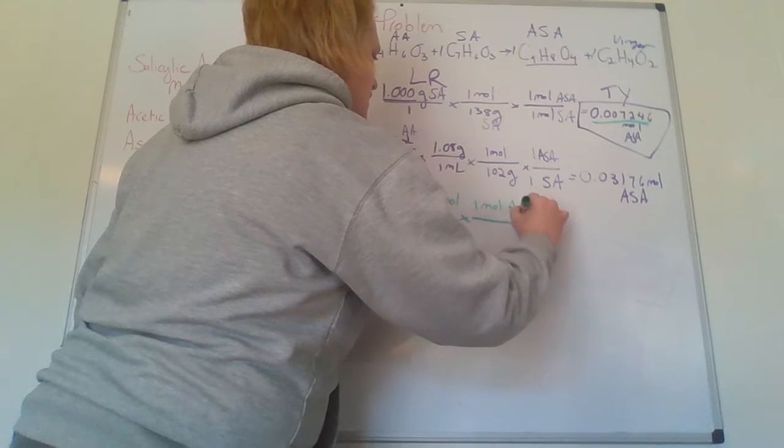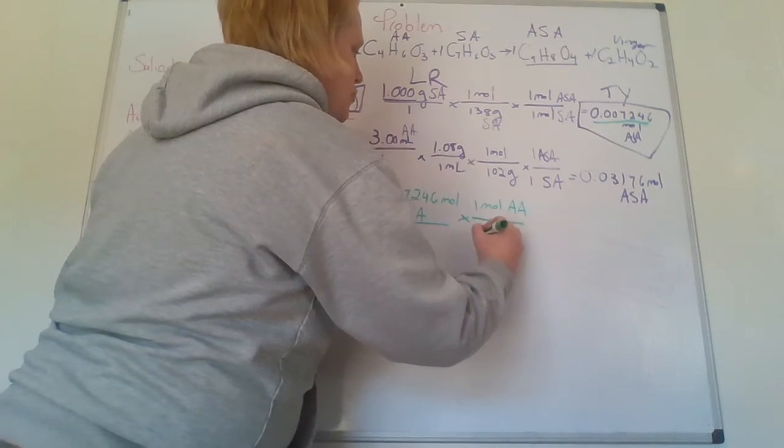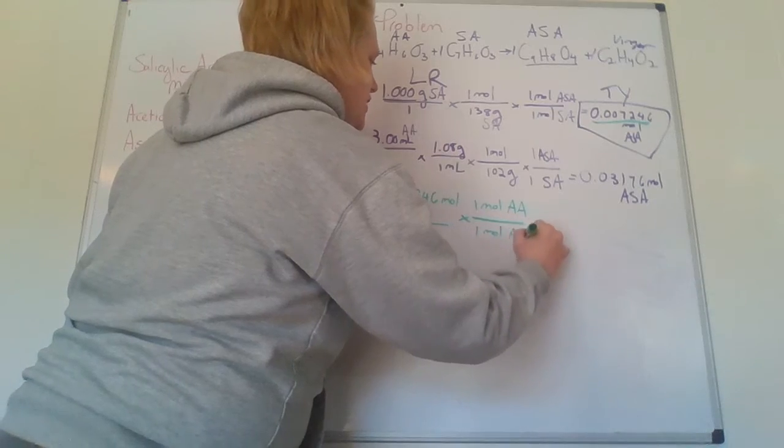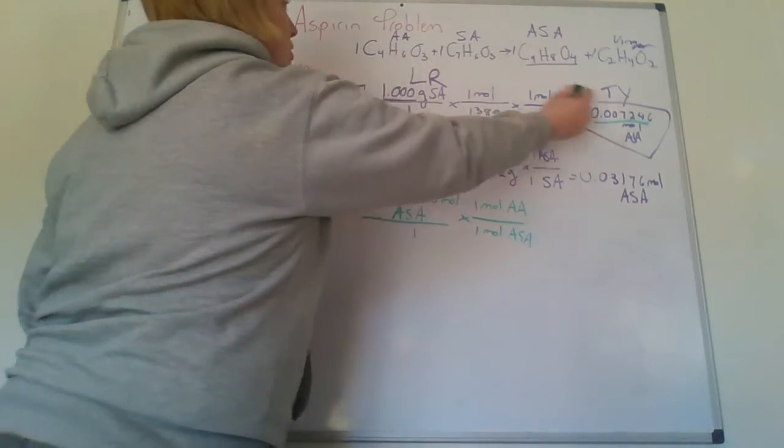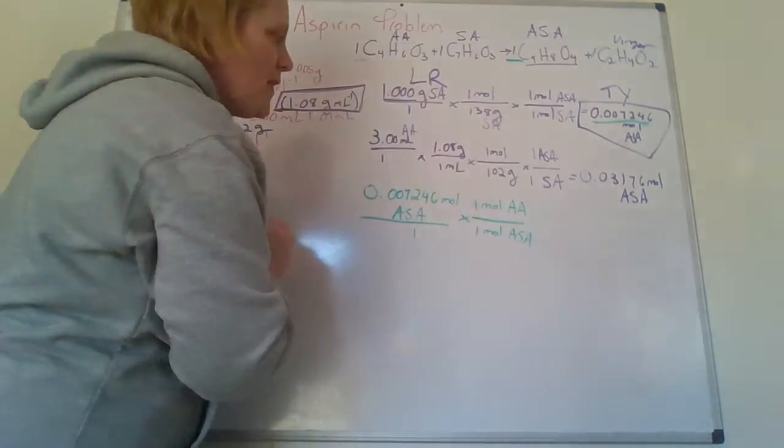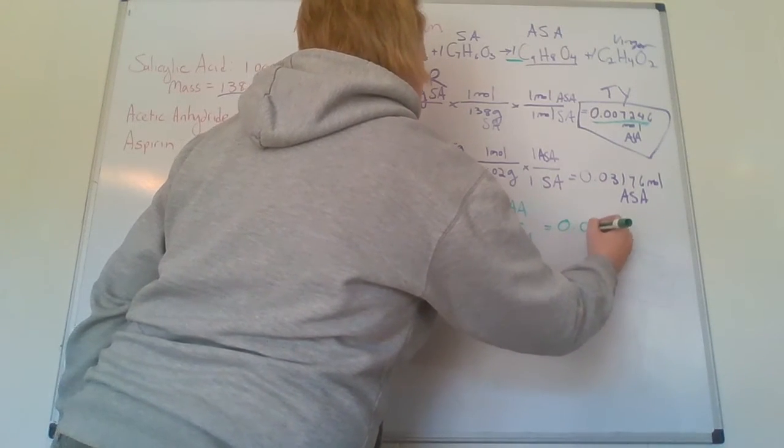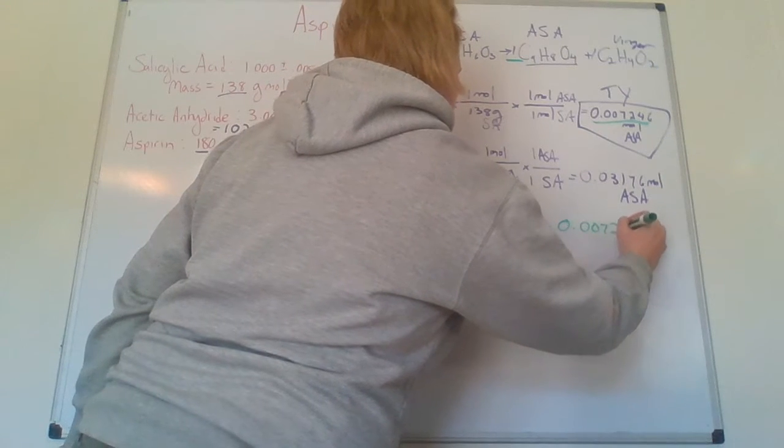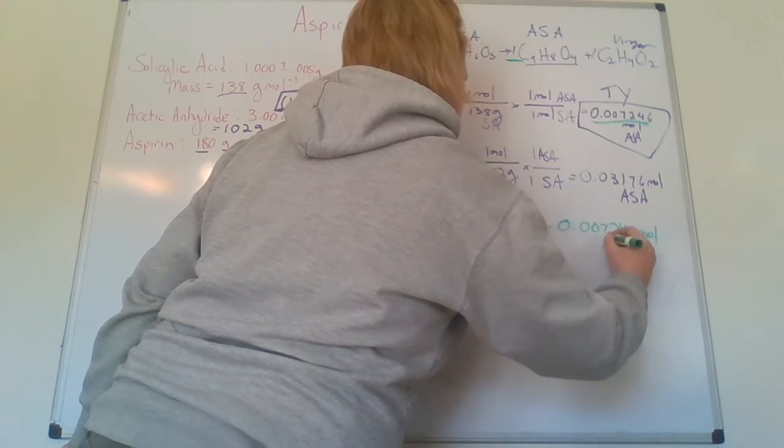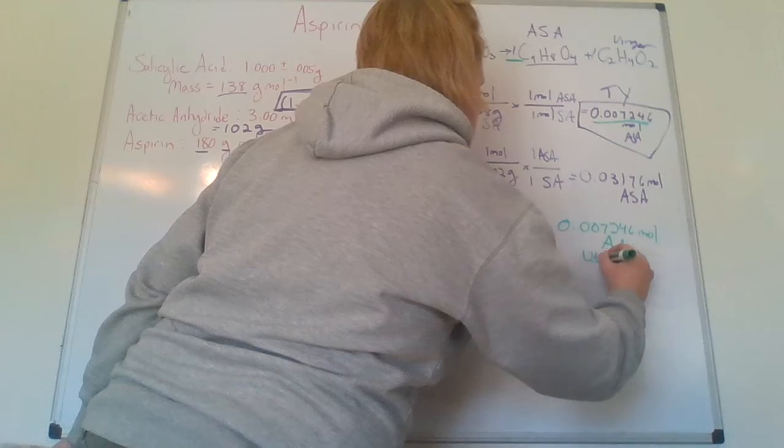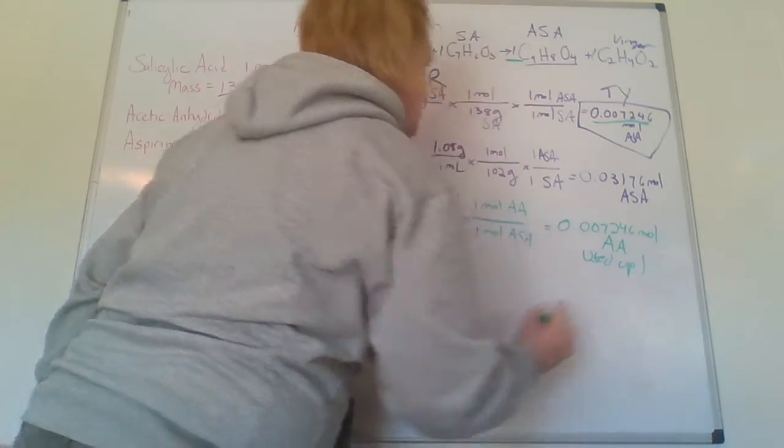So one mole of acetic anhydride will go to one mole of aspirin, again, according to my balanced chemical equation. And when I do that, I'll find that I used up 0.007246 moles of acetic anhydride. That's how much I used up.